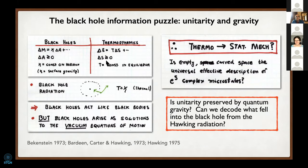Clearly these are in formal analogy to the laws of thermodynamics. Furthermore, in 1975, Hawking showed that black holes actually radiate like thermal bodies. You imagine a pair production process just outside the horizon where one element of the pair falls in and one falls out, and you can show that this outgoing radiation acts as if it's thermal with a temperature of kappa, the surface gravity. So black holes act like black bodies.